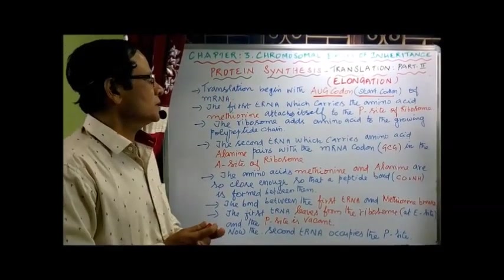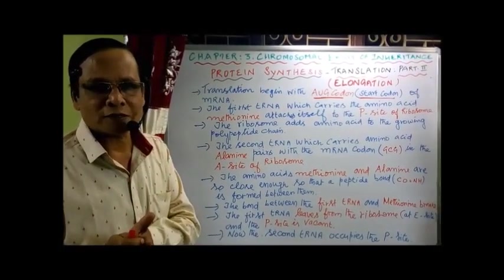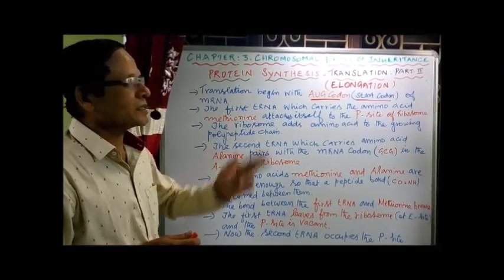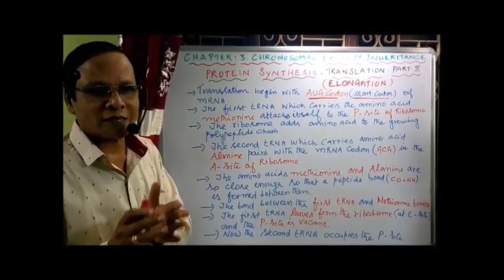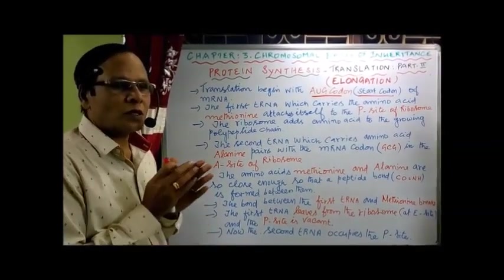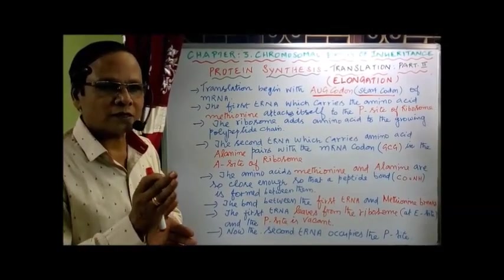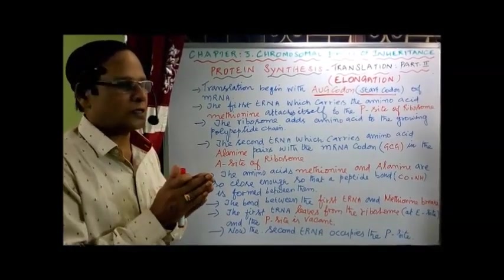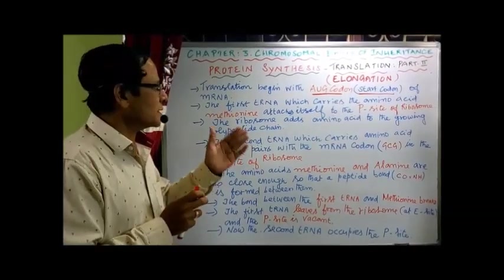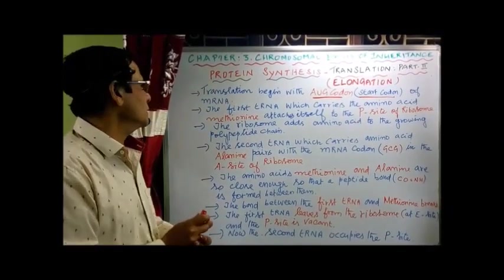So there is a first event. The first tRNA — after attachment with amino acid it is called amino acid tRNA, through the acylation process — which carries amino acid methionine is called methionine tRNA. This is the only tRNA which is attached directly to the P-site. All other tRNAs are attached to the A-site first, then they are shifted to the P-site.